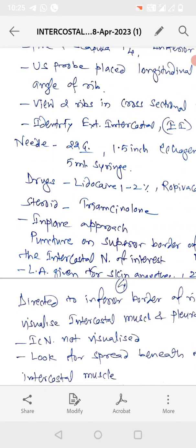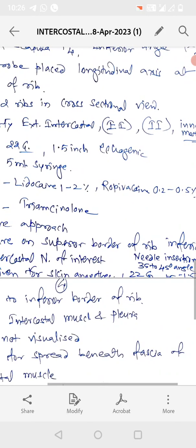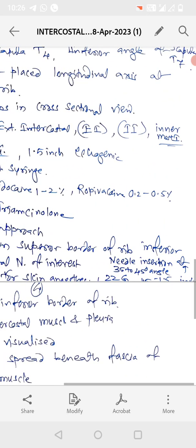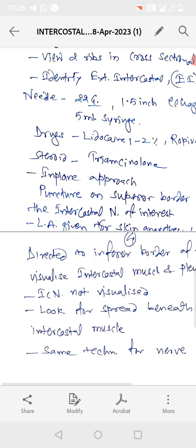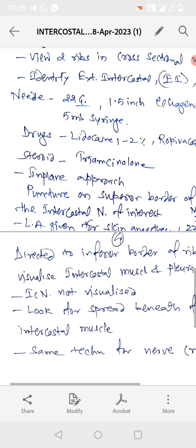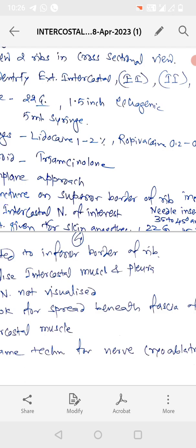Now we should identify external intercostal muscle, internal intercostal muscle and innermost intercostal muscle. Needle selection. Needle is 22 gauge, 1.5 inch echogenic needles are preferred and 5 ml syringe is taken.